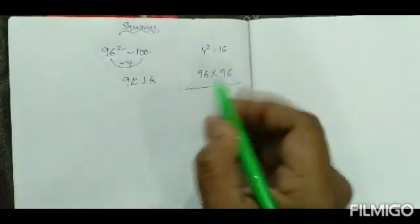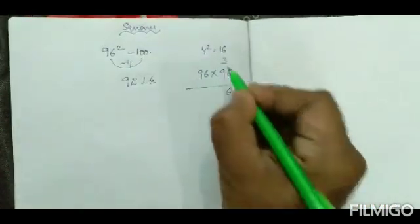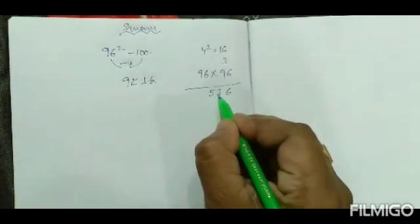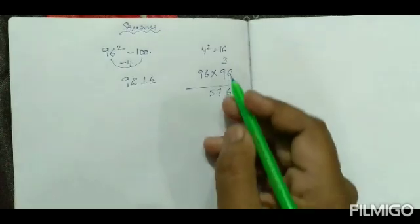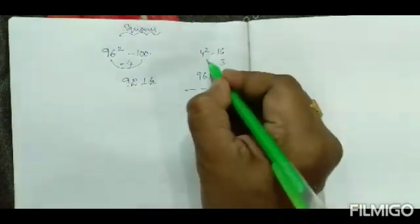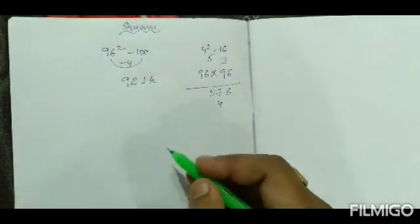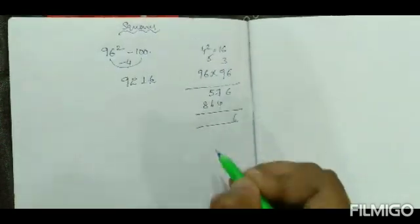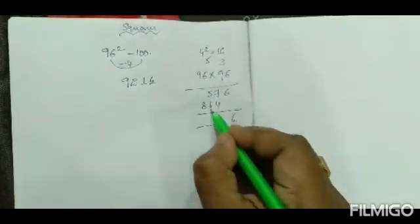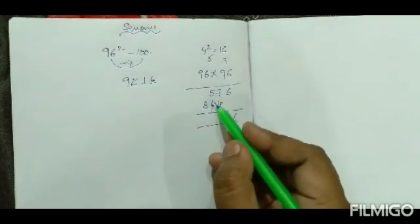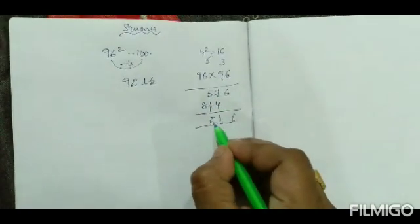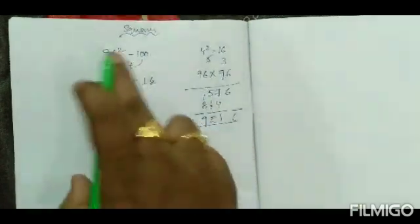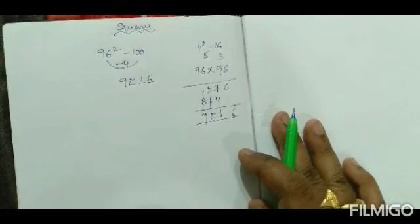Multiplying 96 × 96: 6×6=36, carry 3; 6×9=54, plus 3 = 57. Then 9×6=54, carry 5; 9×9=81, plus 5 = 86. Adding the partial products: 9216. So 96 squared is 9216, confirmed.